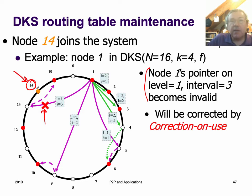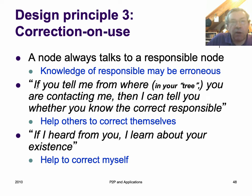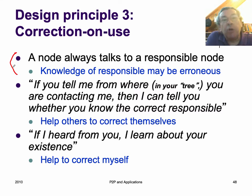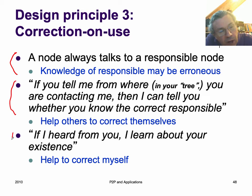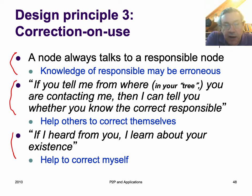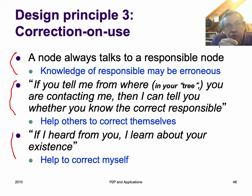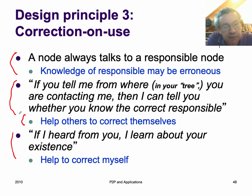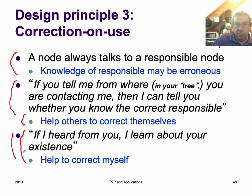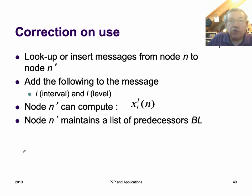This will be corrected by the mechanism called correction on use. Nodes are always talking to responsible nodes, but the responsible node might be wrong because of nodes joining or leaving. Messages during normal operation give information: if you tell me where you're contacting me from, I can tell you whether you know the correct responsible node. If I know a node has joined, I'll correct you and tell you the right one. Also, if I hear about a node I didn't know about, I can put it in my routing table. Lookup or insert messages from node N to N-prime include interval and level information so that N-prime can compute the responsible nodes.